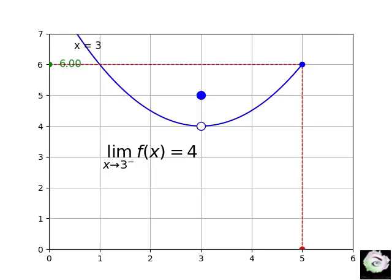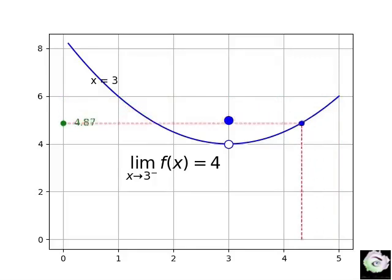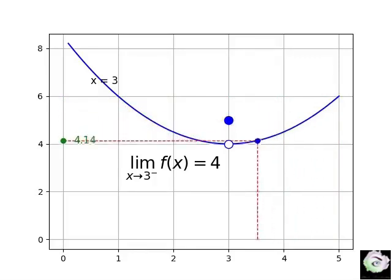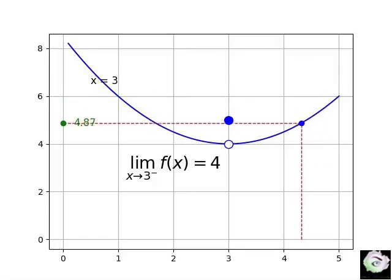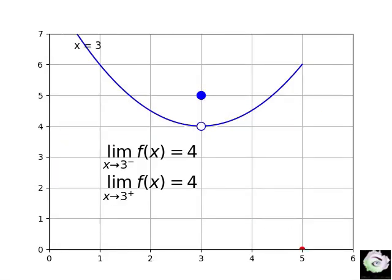Let's observe the movement of the y coordinate as x moves toward 3 from the right. We can see that as x moves towards 3 from the right, y moves towards 4. Therefore, we conclude that the right limit of f at 3 is 4. We denote it by symbols as: lim as x approaches 3 from the right of f of x equals 4.